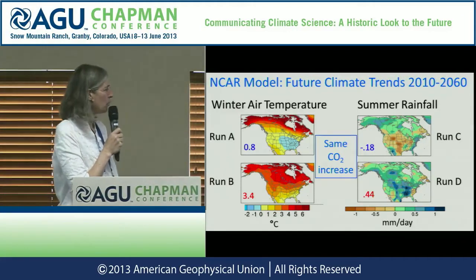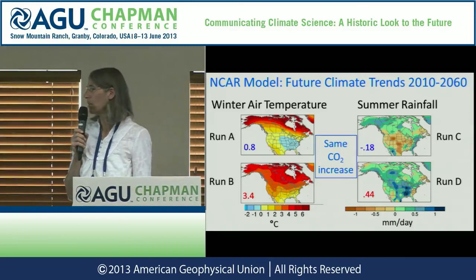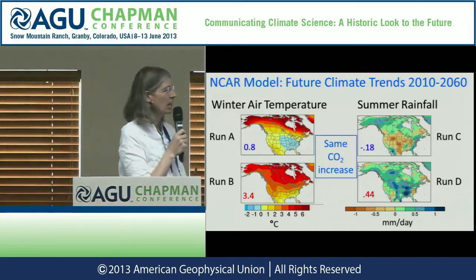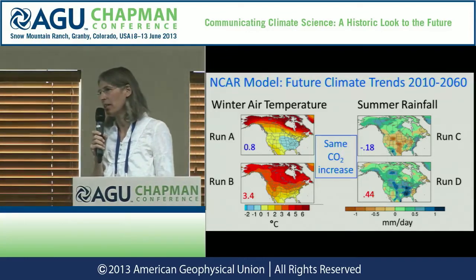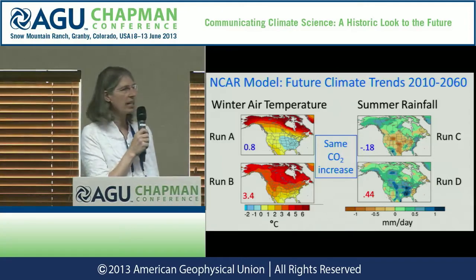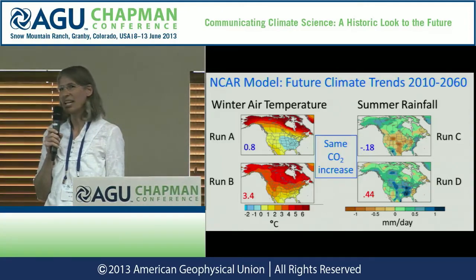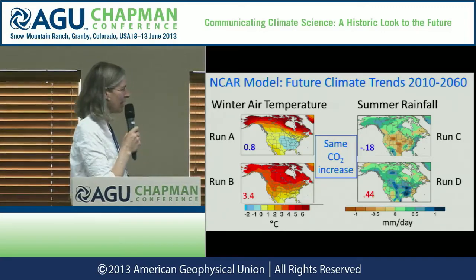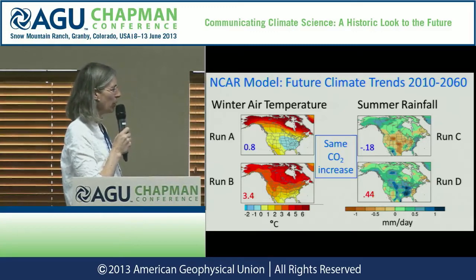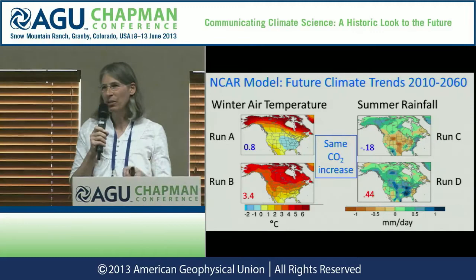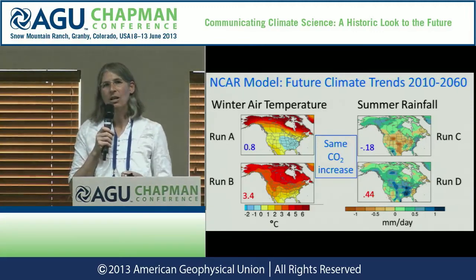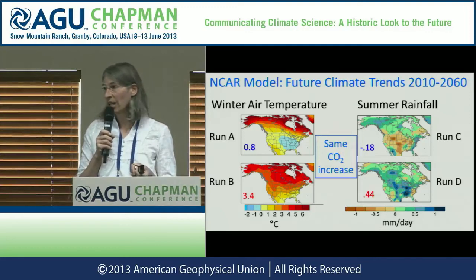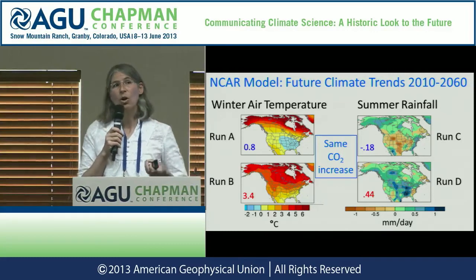Here is an example for another variable of interest: summertime rainfall. Runs C and D are shown, where brown colors indicate decreasing rainfall and blues and greens indicate increasing rainfall over the next 50 years. These two runs give an almost opposite picture over the United States, despite the fact that greenhouse gases are increasing in both. This tells us that the naturally freely evolving component of climate variability on a 50-year time horizon can swamp the greenhouse gas-induced change for summertime rainfall over the United States.